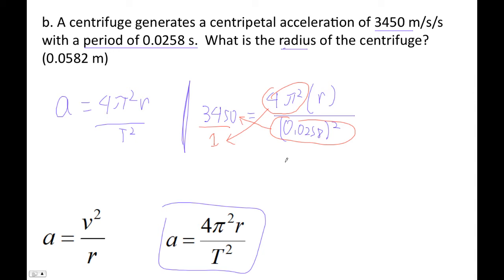So 3450, I'm going to go times 0.0258 squared, right? And then I'm going to divide by 4π². So divided by 4, divided by π².